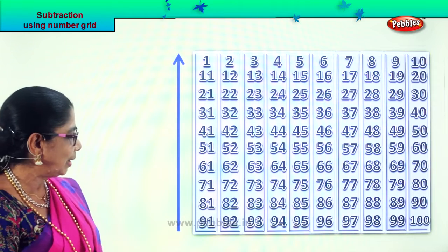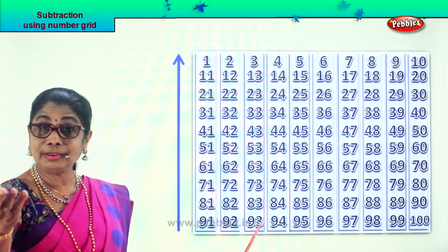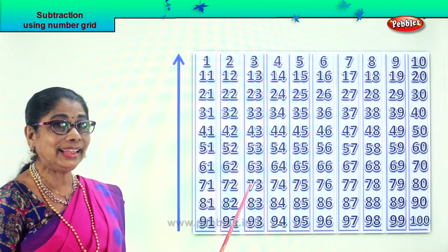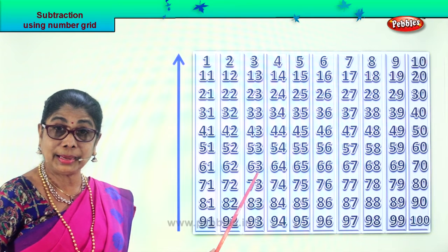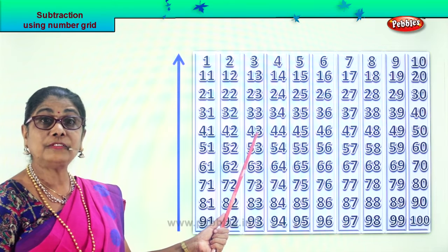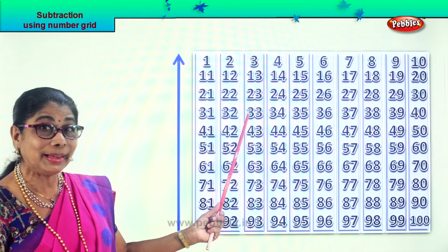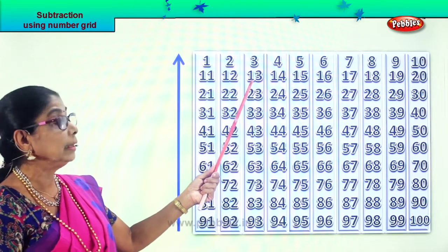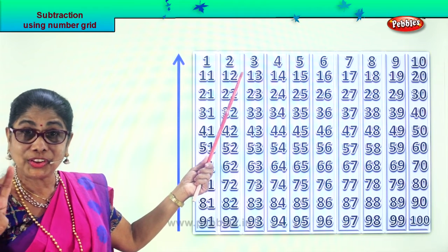Are you enjoying it? Now look at this — 93. From 93 if you minus 10 — 83. 83 take away 10 — 73. 73 take away 10 — 63. 63 minus 10 — 53. 53 minus 10 — 43. 43 minus 10 — 33. 33 minus 10 — 23. 23 minus 10 — 13. From 13 take away 10 — 3. Excellent!